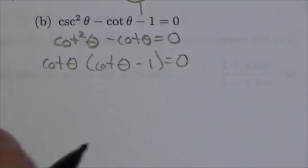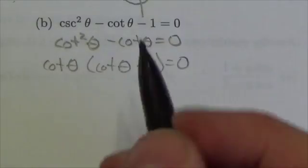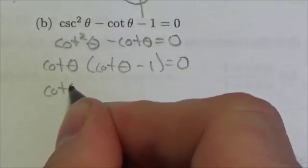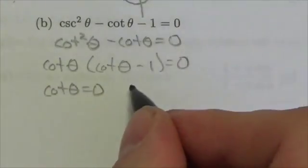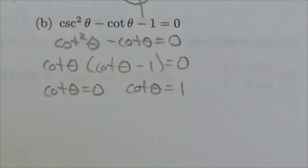Now, in order for the product here to be equal to 0, either the cotangent of theta is equal to 0, or the cotangent of theta is equal to positive 1.